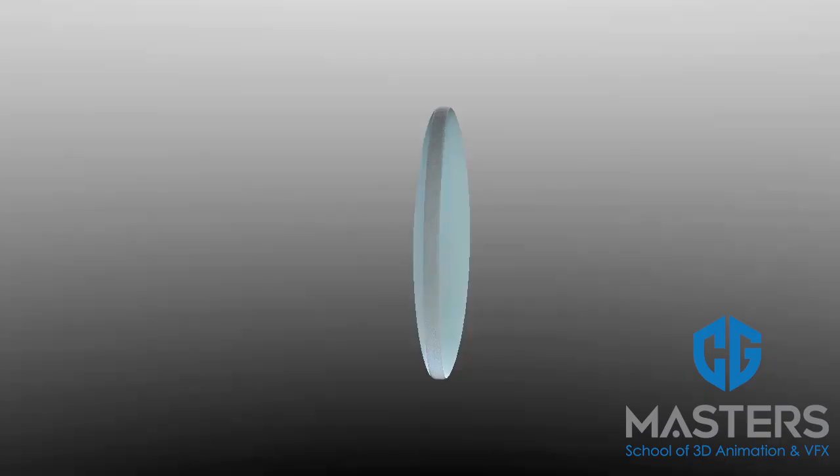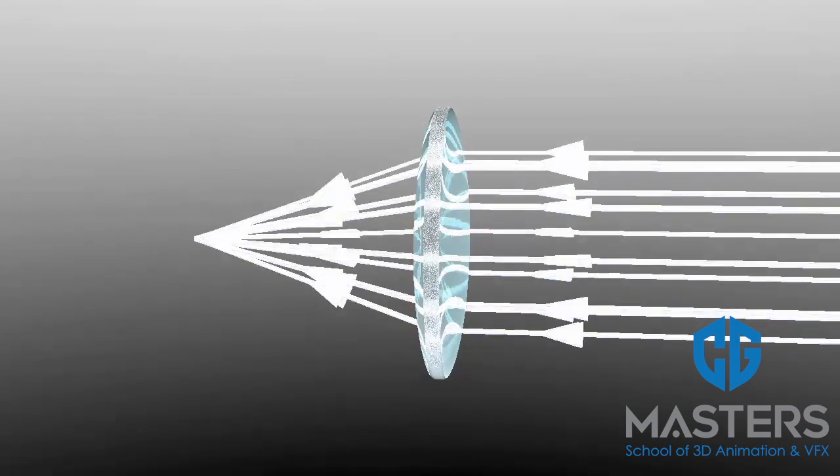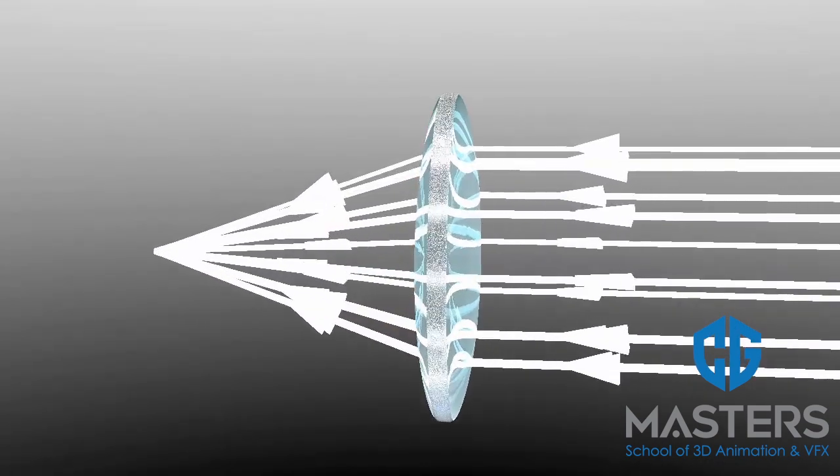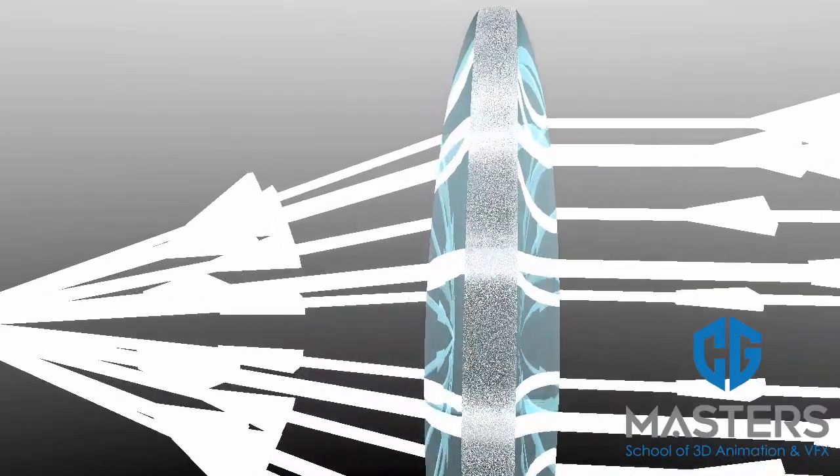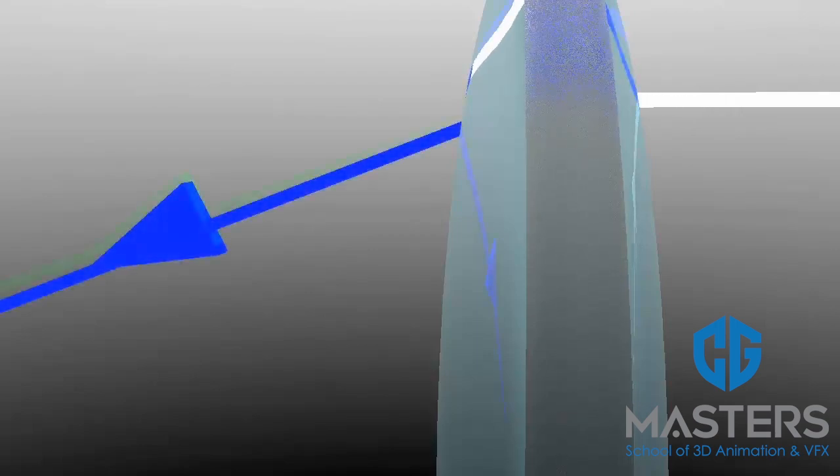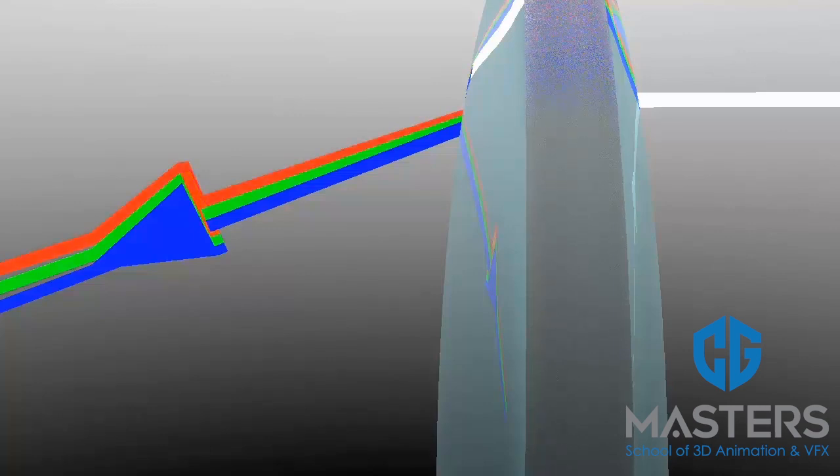Chromatic aberration is the failure of a lens to focus all colors to the same point. It occurs because lenses refract or bend different wavelengths of light different amounts. Colors on the high end of the visible light spectrum, such as blue and violet, will refract more than the colors on the low end of the spectrum, such as red. Chromatic aberration manifests itself as fringes of color along boundaries that separate dark and bright parts of the image.